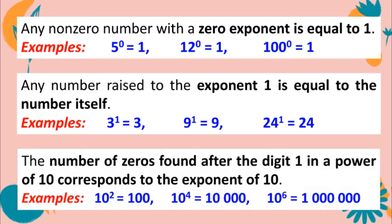The number of zeros found after the digit 1 in a power of 10 corresponds to the exponent of 10. This means when the base is 10, the exponent equals the number of zeros in the value. Examples: 10 to the second power equals 100 (two zeros), 10 to the fourth power equals 10,000 (four zeros), 10 to the sixth power equals 1,000,000 (six zeros).